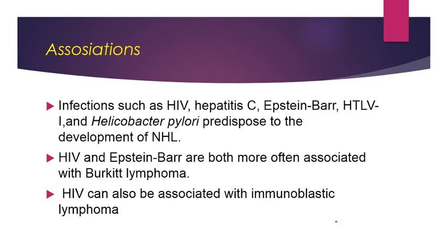Infections such as HIV, Hepatitis C, and Epstein-Barr virus predispose to the development of Non-Hodgkin's Lymphoma. HIV and Epstein-Barr virus cause Burkitt lymphoma, which falls in the intermediate B cell type of Non-Hodgkin's Lymphoma.